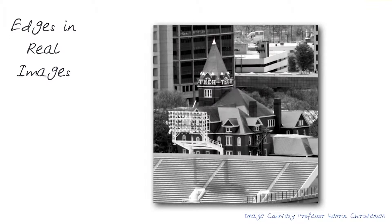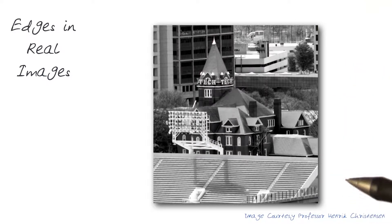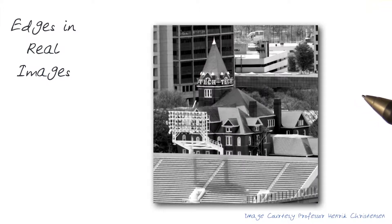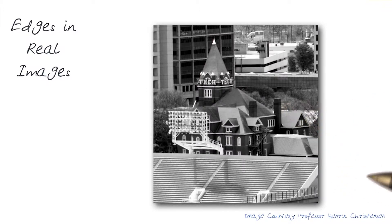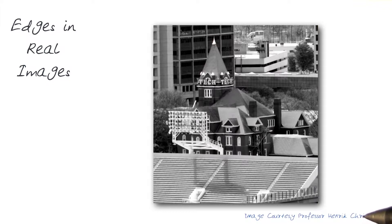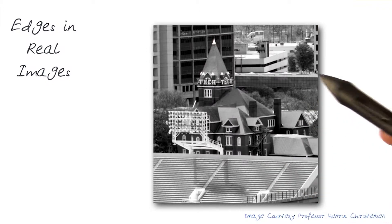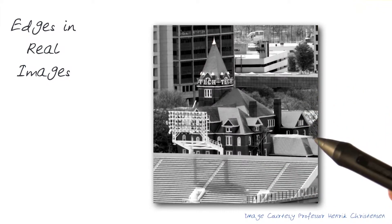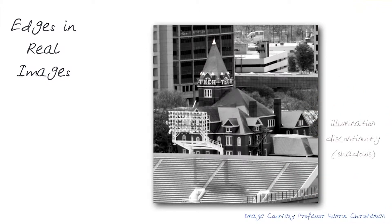Just to help us understand this, I want to emphasize that let's find these types of changes in a real image, like this one — the Tech Tower, a photo taken by my colleague Henry Christiansen. And let's look at various types of things within this image.